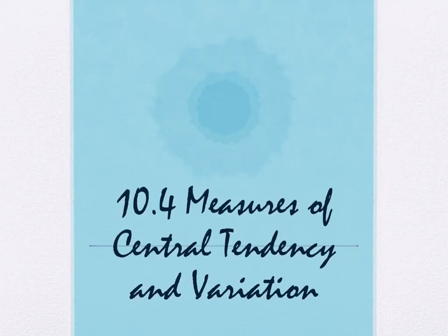Section 10.4 - we are going to be looking at measures of central tendency and variation. Central tendency could be referred to as averages. We're going to look at how to average things, and there's more than one way to do it. Measures of variation is how far things are away from whatever average we're looking at.